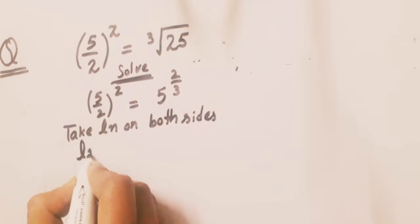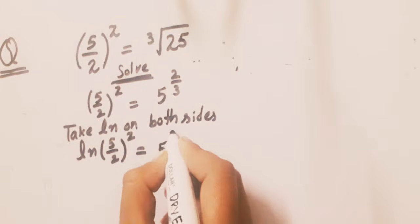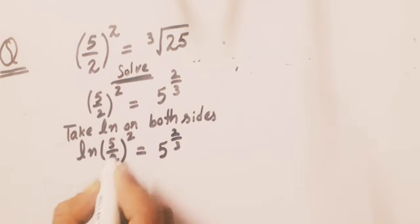So ln[(5/2)^z] = ln[5^(2/3)]. We have to find the value of z.